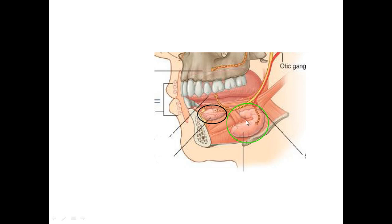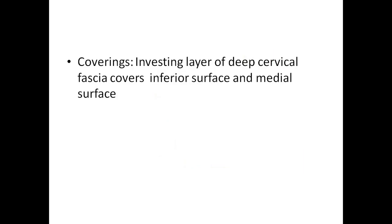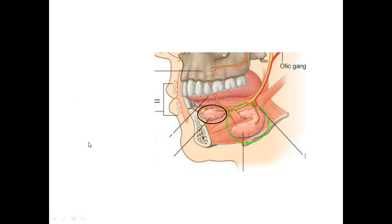Saliva is an ultrafiltrate of plasma, and that plasma comes from the glandular branches of the facial artery. Coming to the coverings: the investing layer of deep cervical fascia encloses the submandibular salivary gland, covering its inferior surface and lateral aspect.